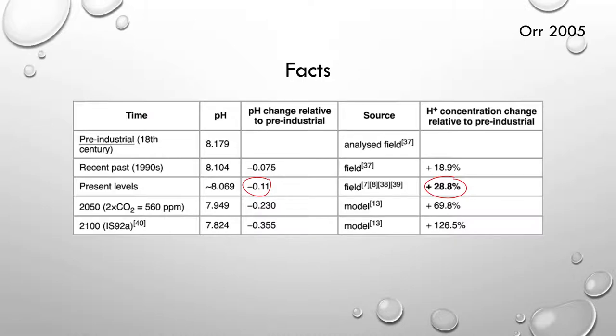It is thought that in the year 2100 the pH will be further decreased to a pH of 7.824, which differs 0.3 units relative to the pH of the ocean in the Industrial Revolution. This is equivalent to an increase of hydrogen ion concentration of 126.5%.